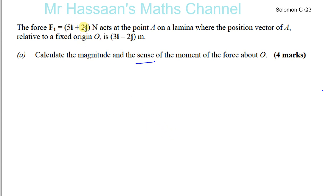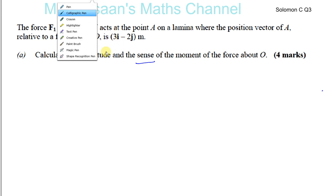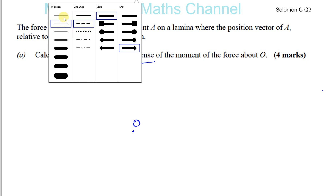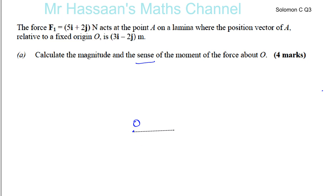The best way to deal with this is to resolve the force horizontally and vertically. Let's first look at the points. O is the origin, and A has position vector 3i − 2j, so it's three units to the right and two units down. Let's say that's where point A is — three meters to the right and two meters down.